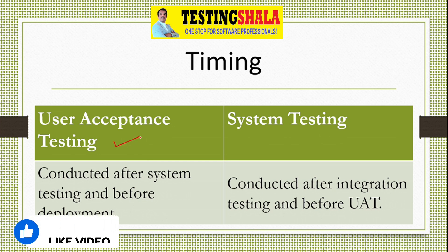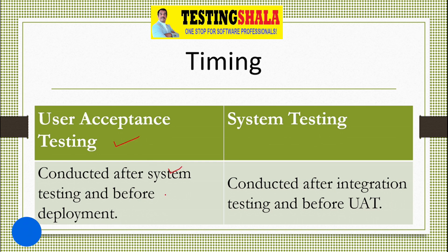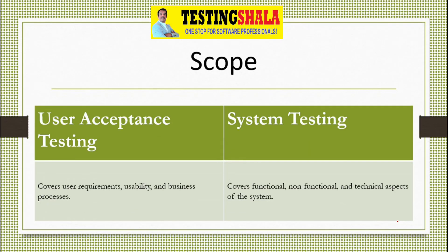Timing is also very important. User acceptance testing is done after system testing and before deploying into the production environment — that is when UAT is going to be executed. System testing will be done after integration testing but before user acceptance testing.